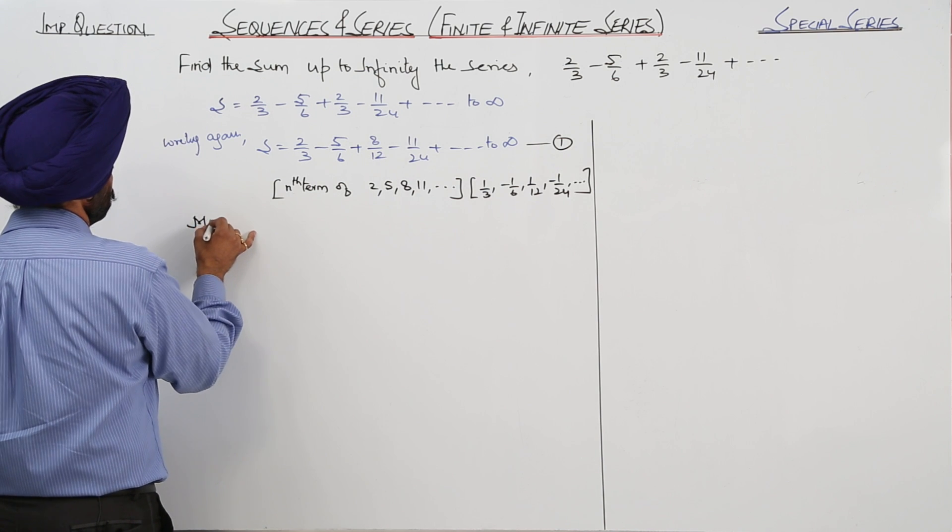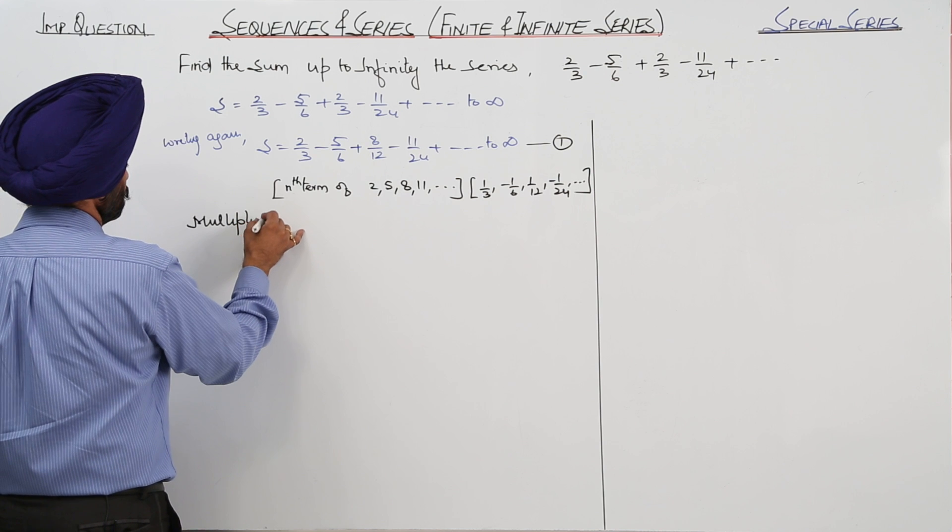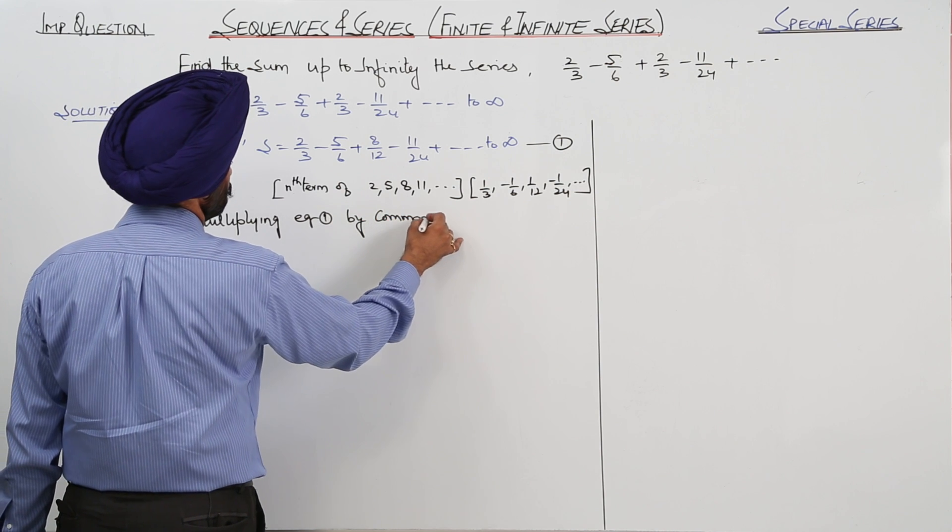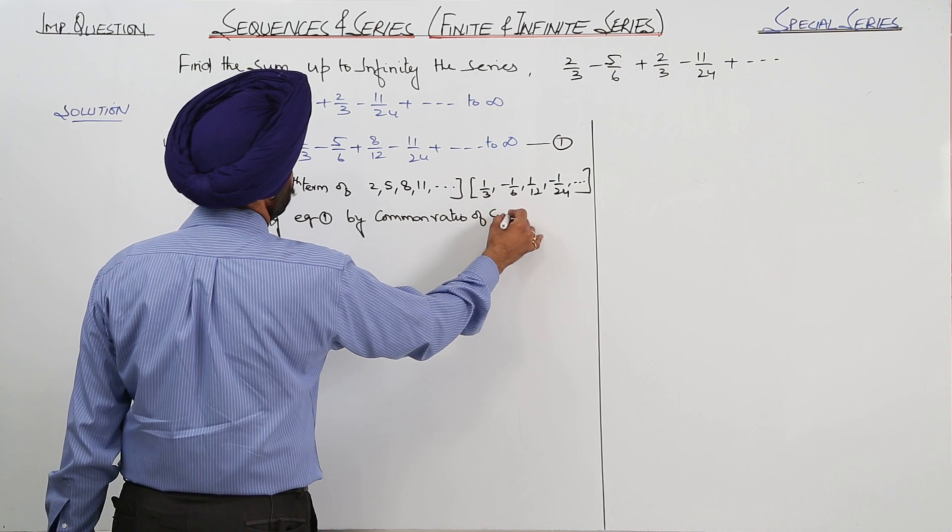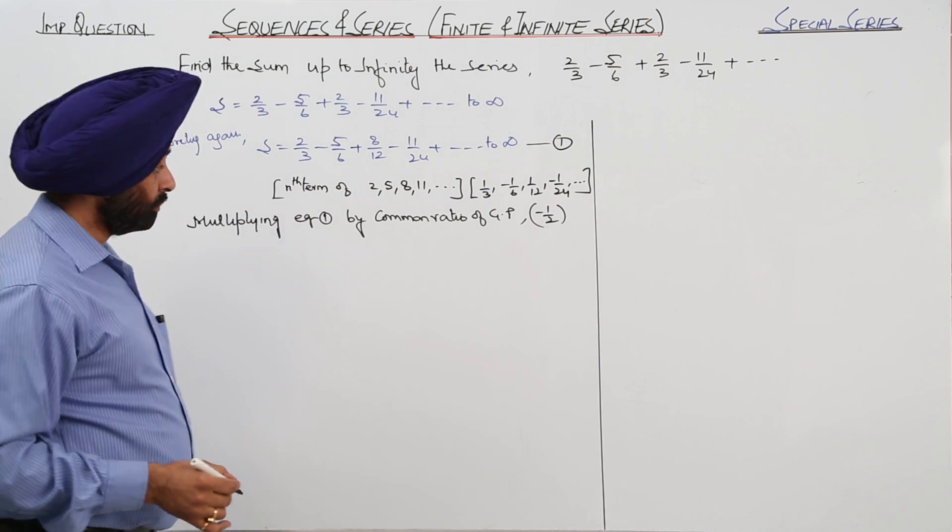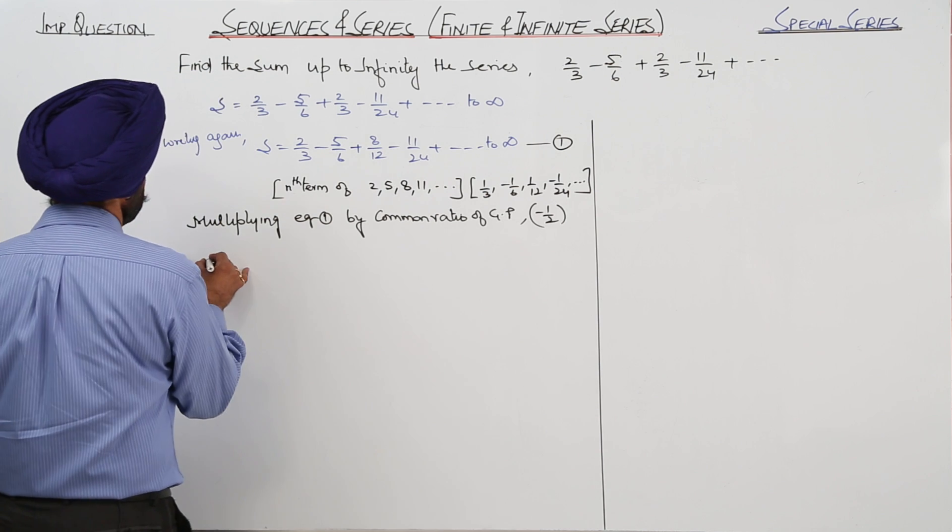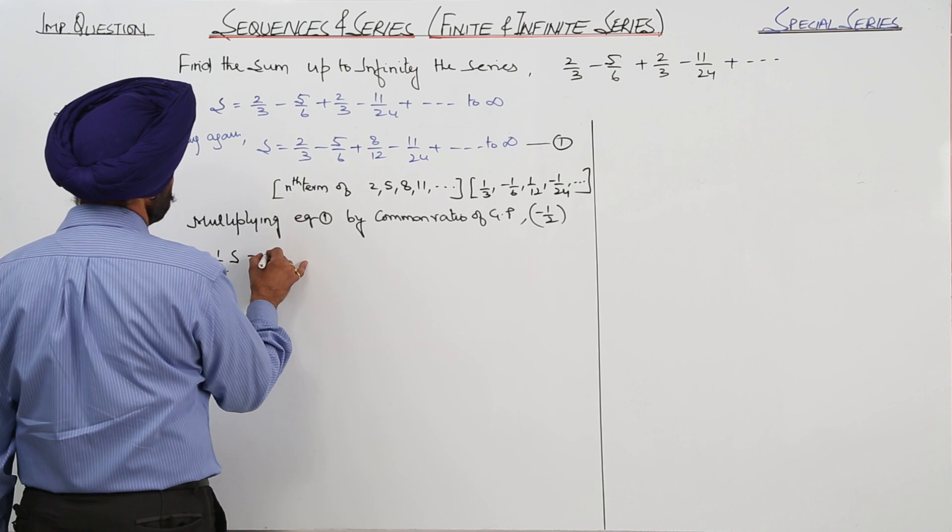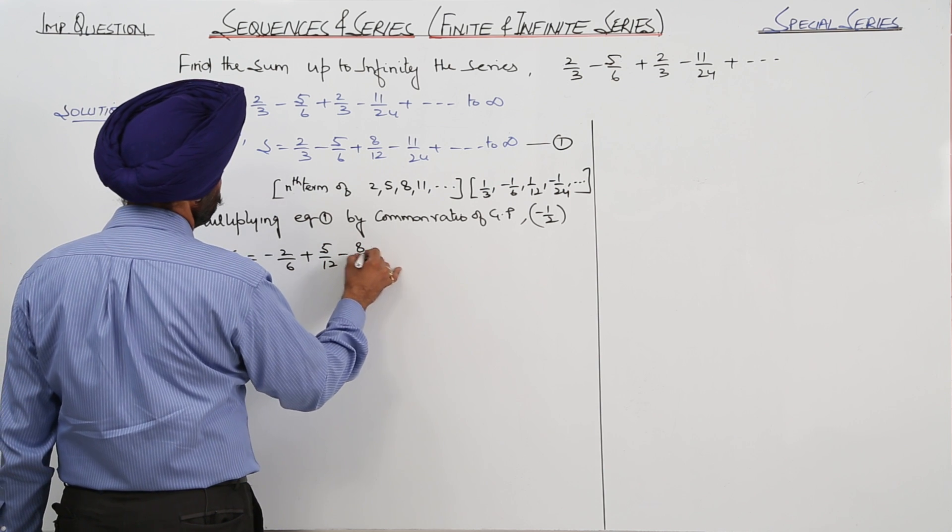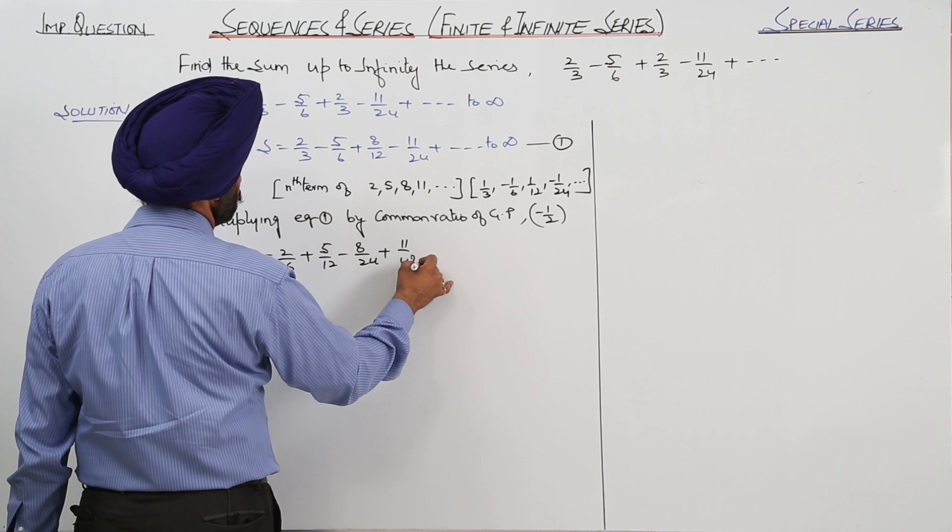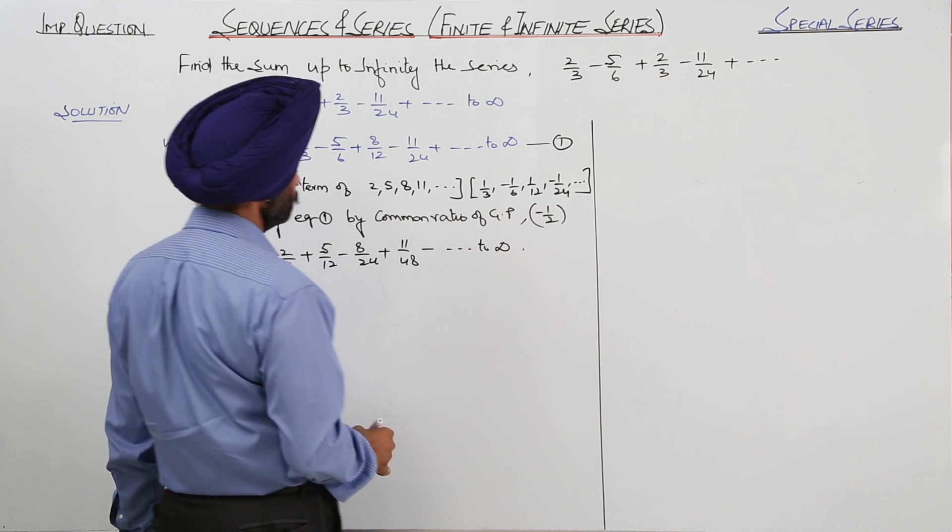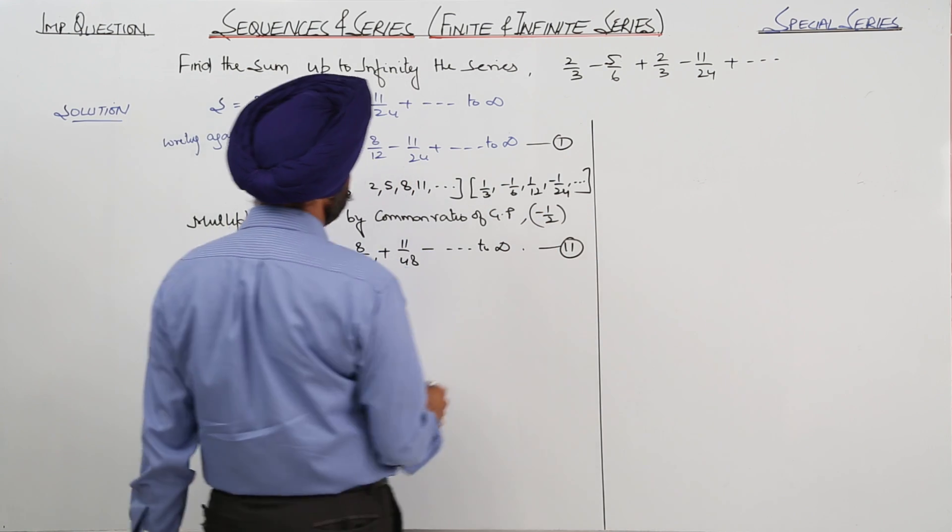Now multiplying equation 1 by common ratio of GP, that is minus 1 by 2. Negative of 1 by 2 S is equal to negative of 2 by 6 plus 5 by 12, negative of 8 by 24, 11 by 48 to infinity. Equation 2.